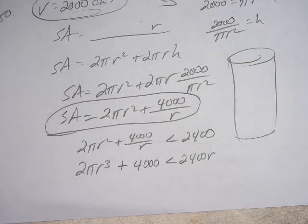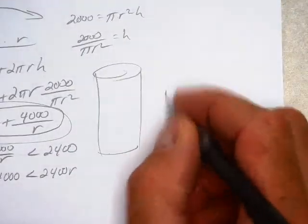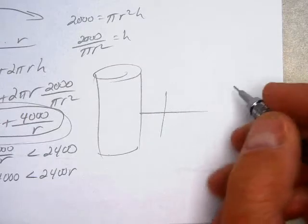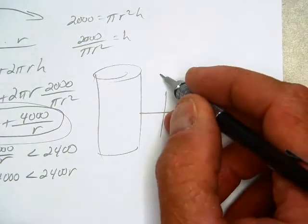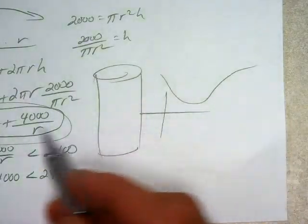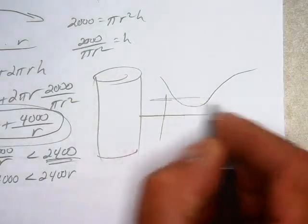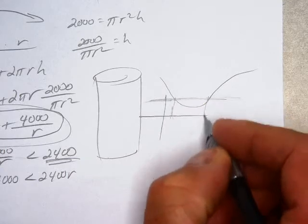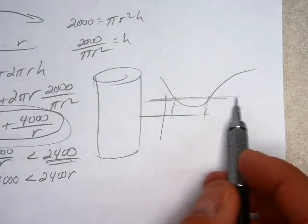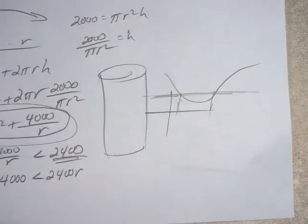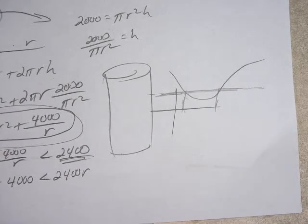And you can do that a couple different ways. You could graph this, and then you could also graph, let's say you graph this, whatever it ends up to be. I really don't care. And then you could also graph 2,400, y equals 2,400. And then that would, from your intersections, that would be a range of values for which your surface area is less than 2,400. That's what you could do with the tool. That would be nice.